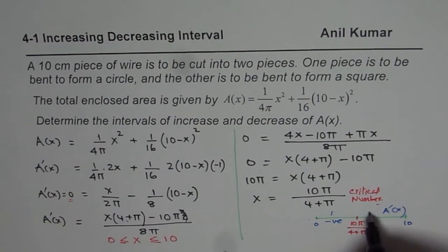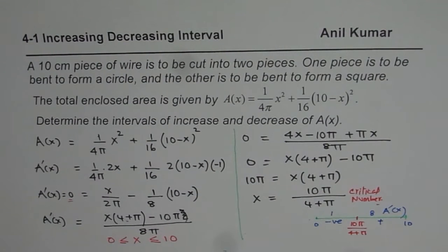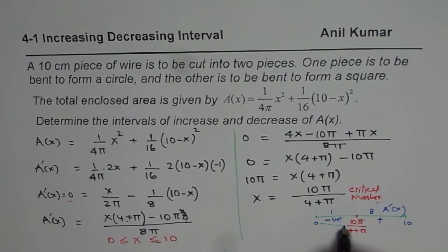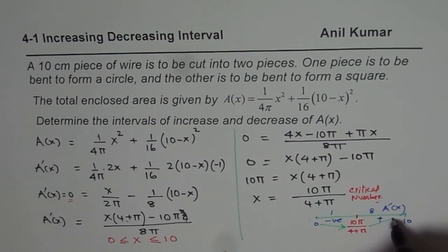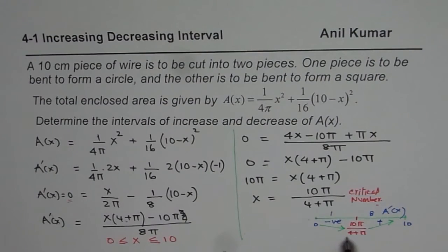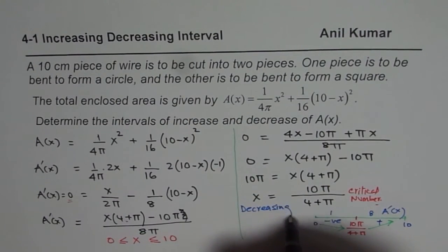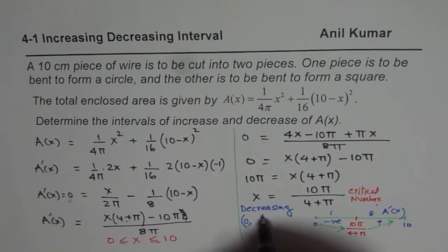If we take a value greater than the critical number, say x = 8, and calculate A′(x), it will be positive. So the derivative is negative before this critical point and positive after it, meaning the area has a minimum at x = 10π/(4 + π).